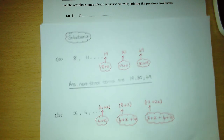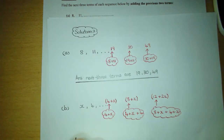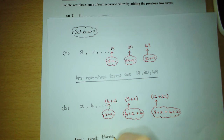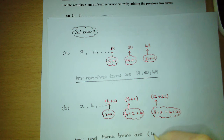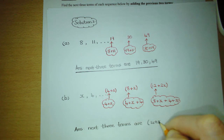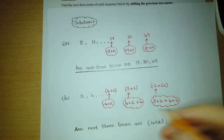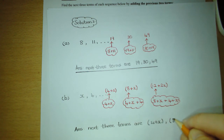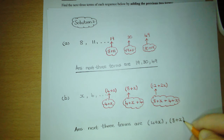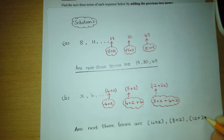So our final answer: the next three terms are (4 + x), keeping brackets around it, (8 + x), and (12 + 2x).